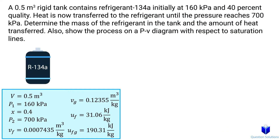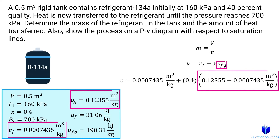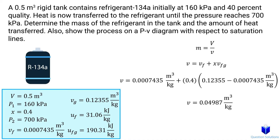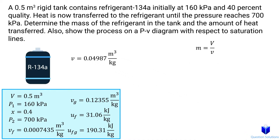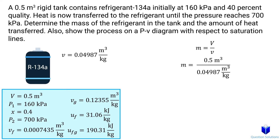First, we need to figure out the mass of the refrigerant. Mass is volume divided by specific volume. We're given the volume but we don't have the specific volume, so let's figure it out. I'm going to use the saturated liquid and vapor specific volume values in this equation. Let's plug in our values — remember that this part is the difference between saturated vapor and liquid specific volume. Solving gives us the specific volume, so now we can go back to our mass equation and plug in our values. Solving gives us the mass of the refrigerant.